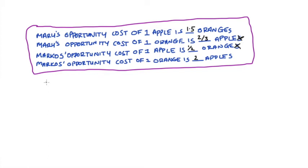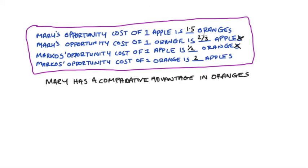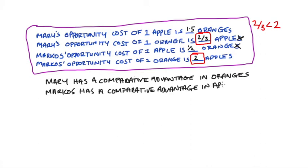Now we can think about comparative advantage. Mary has the comparative advantage in the production of oranges, since when she makes one orange her opportunity cost is two thirds of an apple, while Marcos gives up two whole apples. Two thirds is less than two, so Mary has the lower opportunity cost. Marcos has the comparative advantage in the production of apples, since he only gives up half an orange per apple while Mary gives up 1.5 oranges. Half is less than 1.5, so Marcos has the lower opportunity cost.